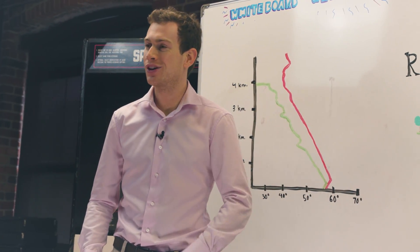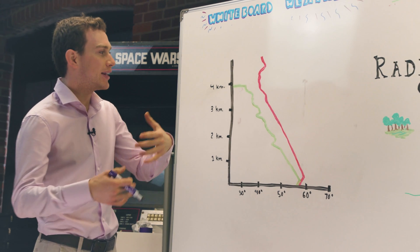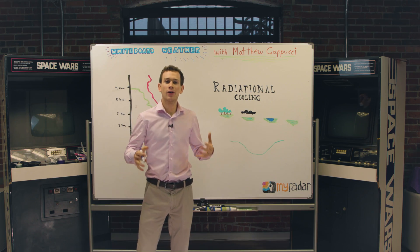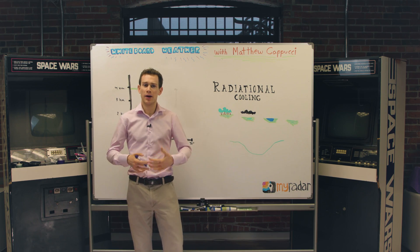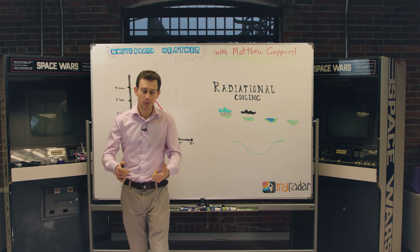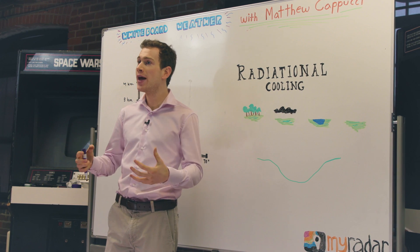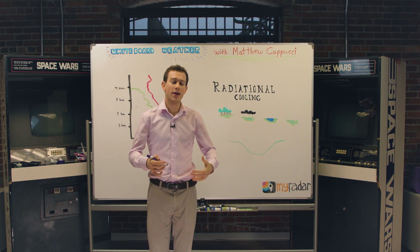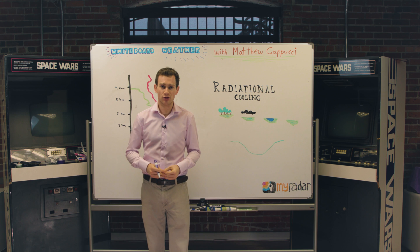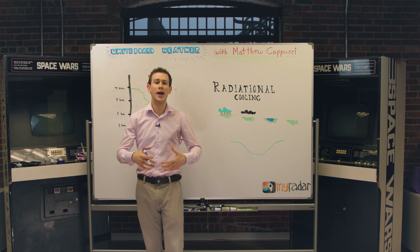Any parcel or pocket of air can be described by a couple attributes: air pressure, temperature, and dew point. The dew point is a measure of how much water is in that pocket of air. Every parcel or pocket of air on Earth can be described by air pressure, temperature, and dew point—dew point being how much moisture is in that pocket of air.